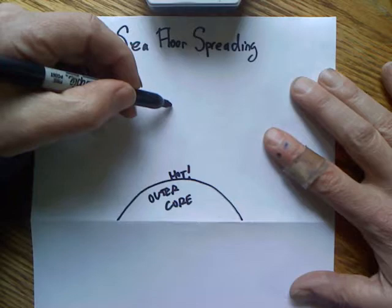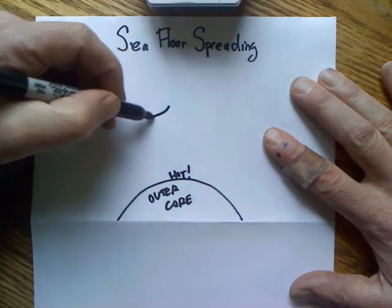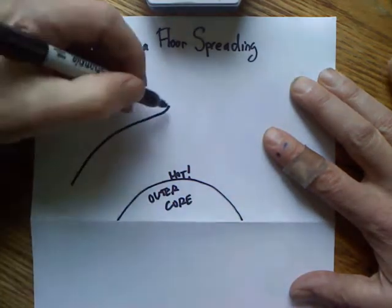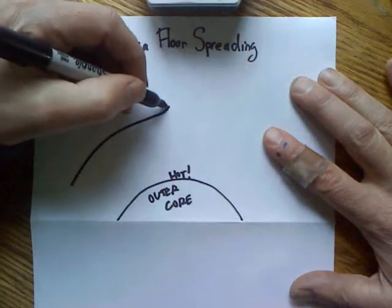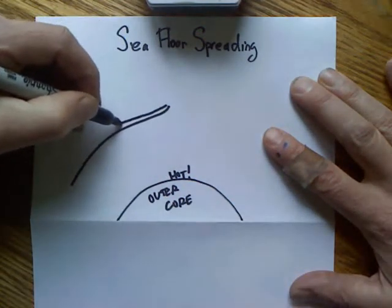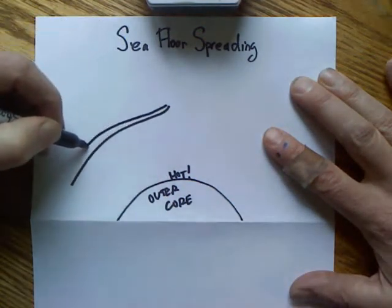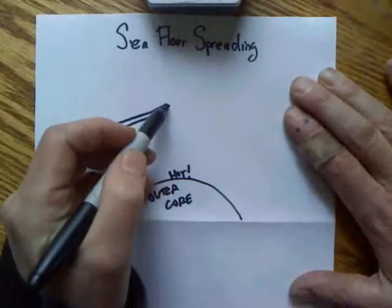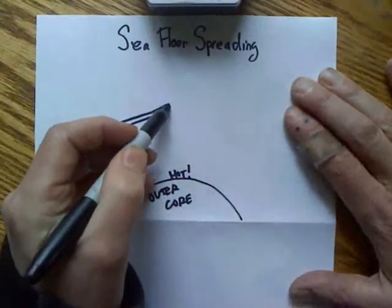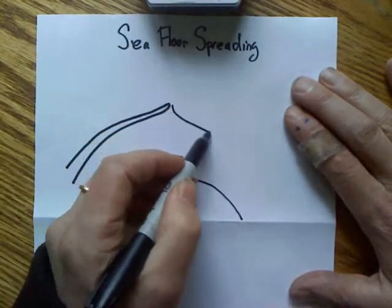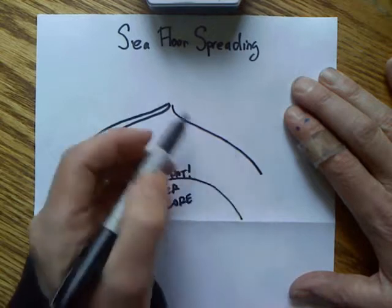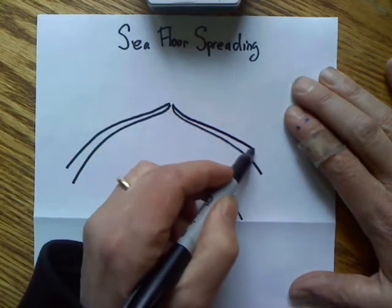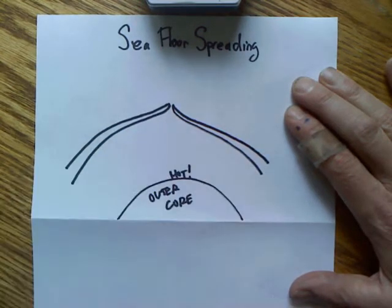Up here, right about the middle, we will make two tectonic plates. Make one tectonic plate going like this, keep that line parallel, and make it a little bit wider as you go out to the end. Then put another one over here — it kind of looks like a mustache. Make it a little wider at the ends.